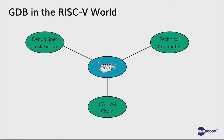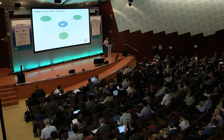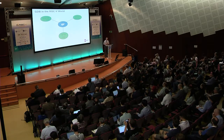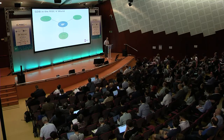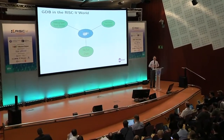So where does GDB sit in the RISC-V world? You might think it needs to worry about the debug specification task group, but that's not really a big issue because GDB sits at a level of abstraction above how debug is implemented. So long as it can read and write registers and memory and start and stop programs, GDB is happy. It does depend on the ABI, so the technical committee, ISA specification, and software toolchain are important — we need to know how to unwind the stack and where to find things in registers. Any particular GDB implementation will be talking to a platform, and some aspects of GDB will be affected by the platform task group.